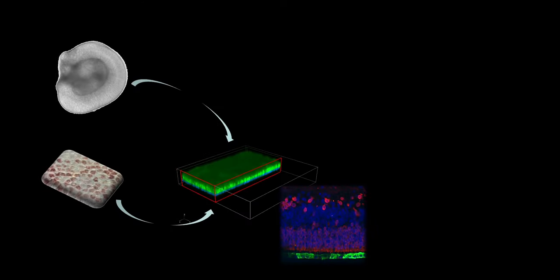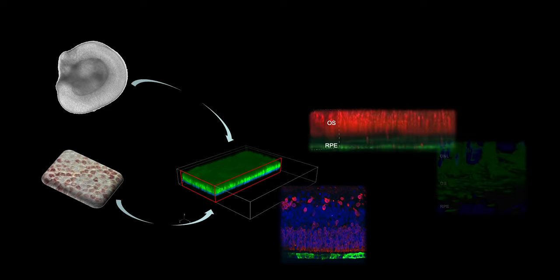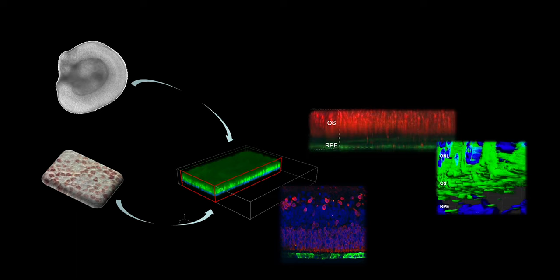Importantly, it recreates in vitro the complex cell-to-cell interactions between photoreceptors and RPE that occur within the native retina, as for example, the interdigitation of the RPE microvilli and the photoreceptor outer segments, and the process of phagocytosis of these outer segments by the RPE cells.